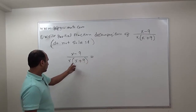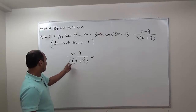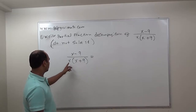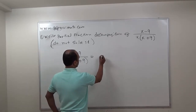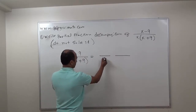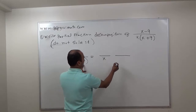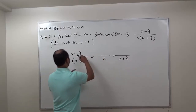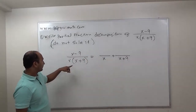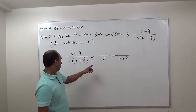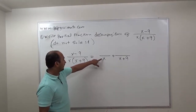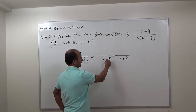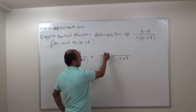We look at the bottom to see if we can factor the denominator. x cannot be factored any further, and x plus 9 cannot be factored any further. So using these two factors, the first factor is x and the next part is x plus 9. What goes on top? We bring some constant. Since this is a linear term x, the degree difference between top and bottom should be one, so on top we just write a constant — we can call it A.